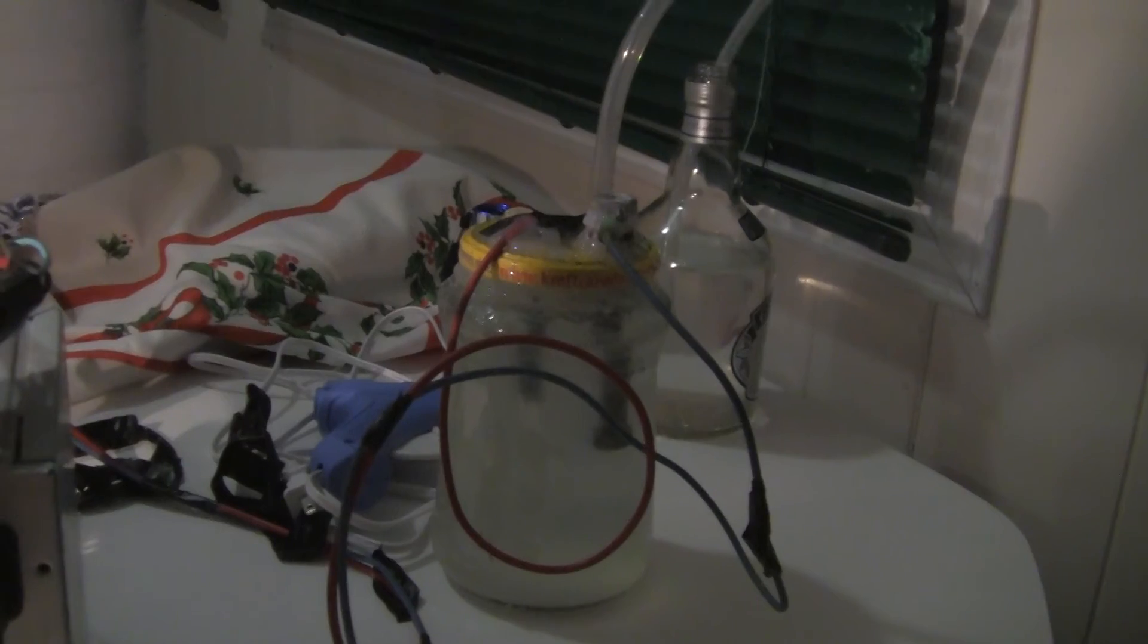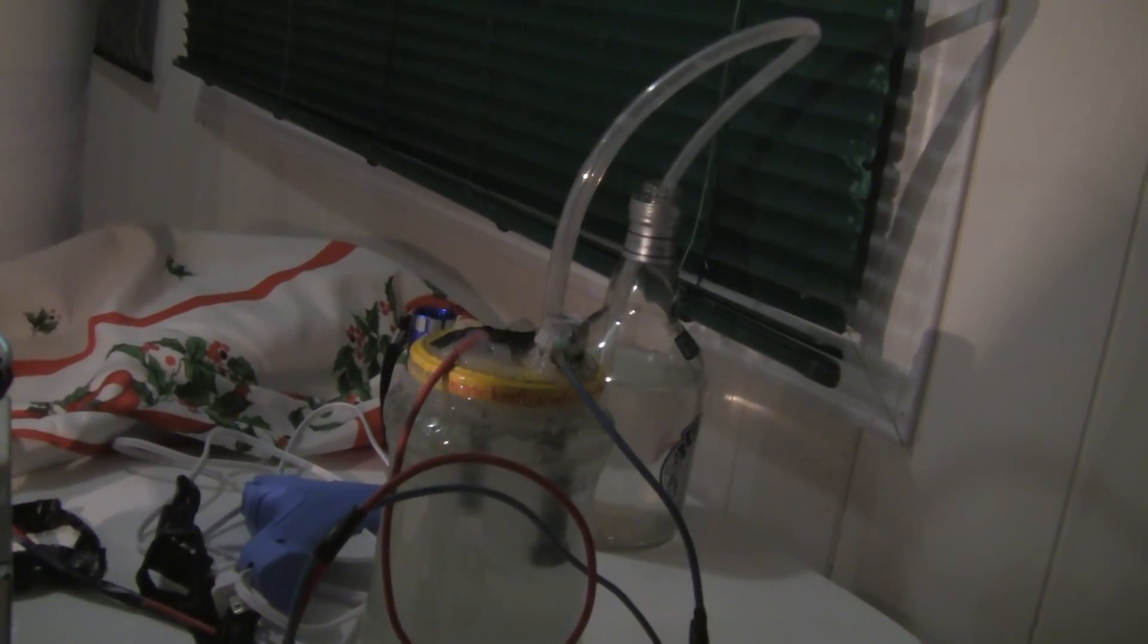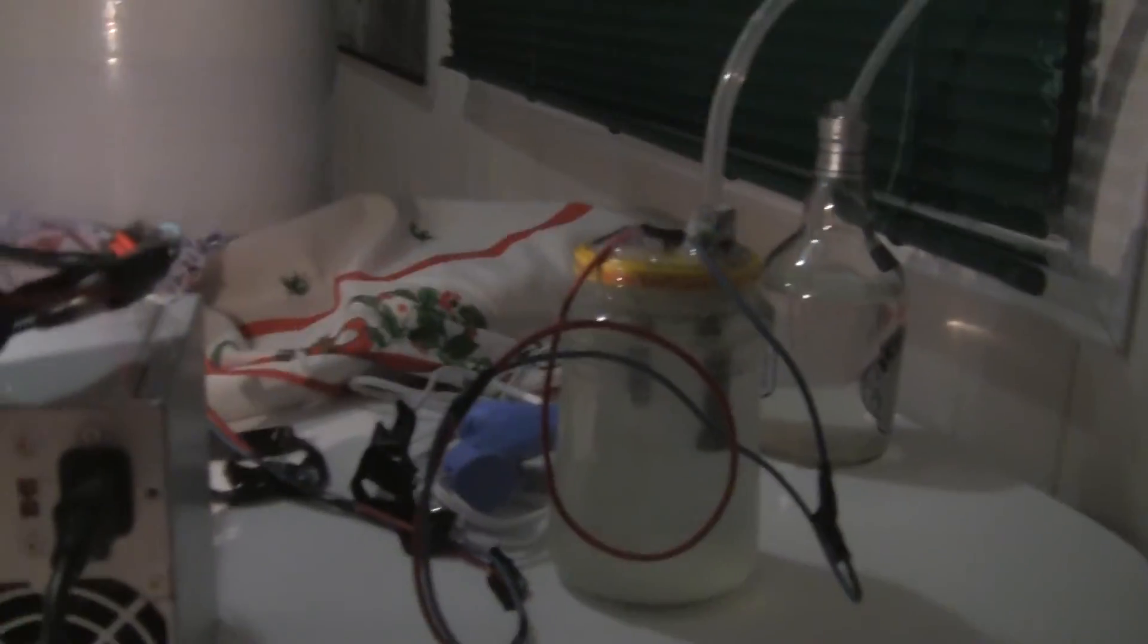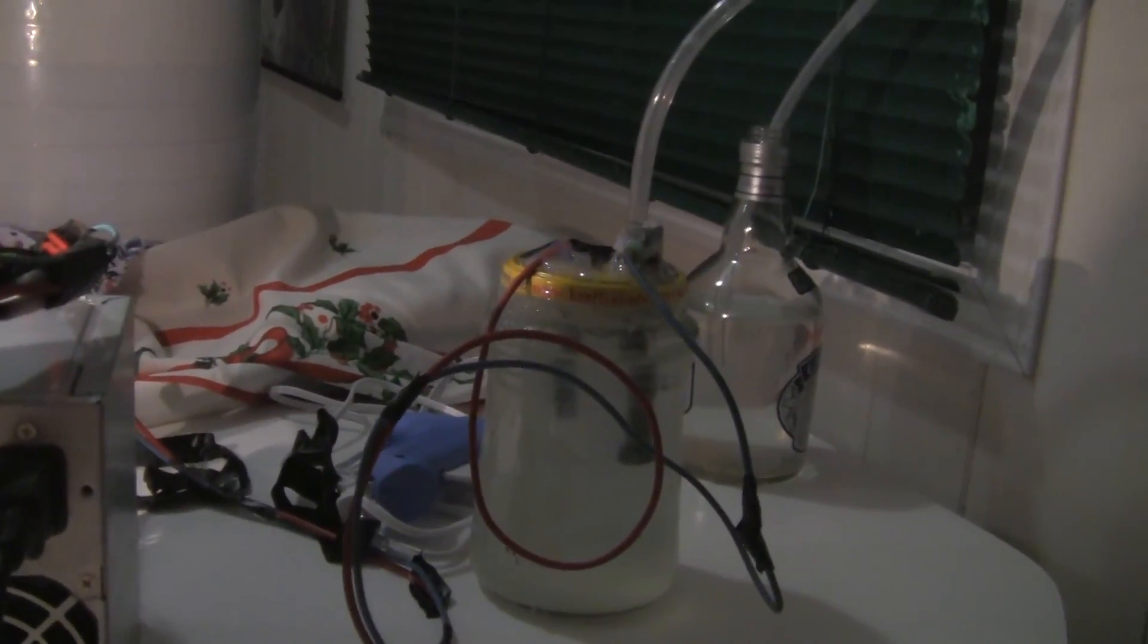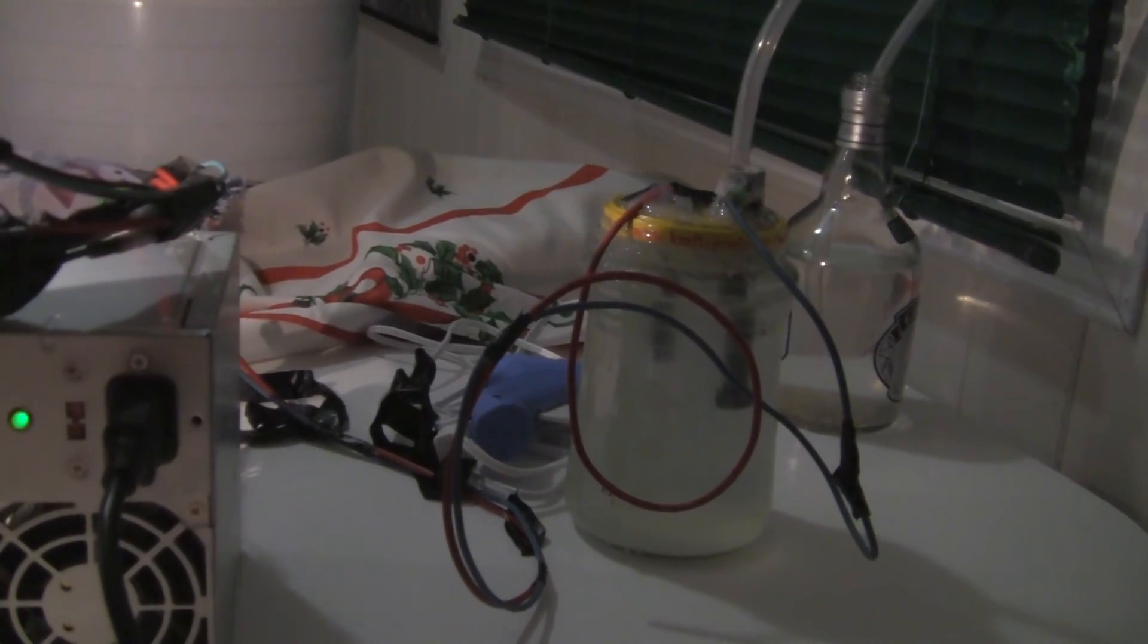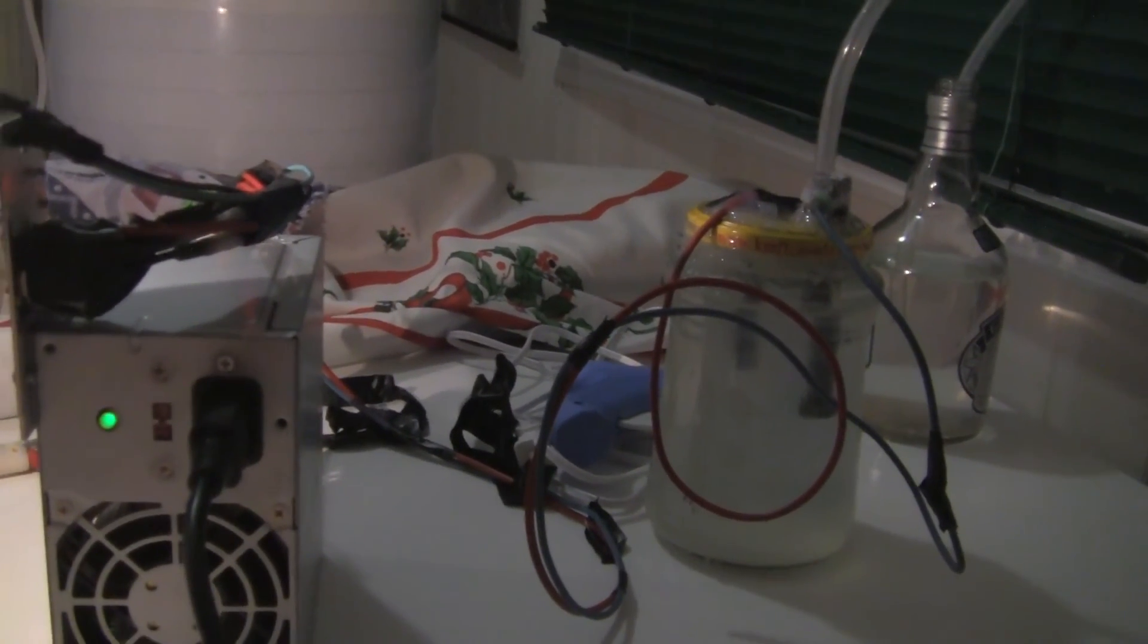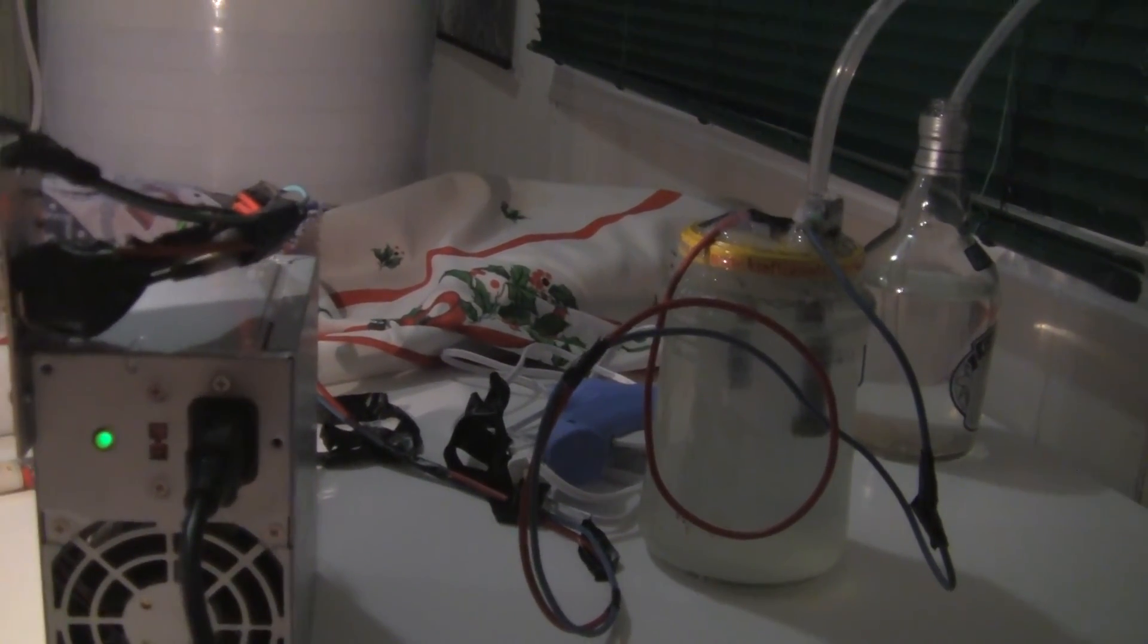I'm waiting on an MMO anode and cathode set coming from, I can't remember what website I found it on, but it's like seven inch diameter. It's kind of a circular shape, one fits inside the other one. It looks like it'll be great. They're actually on sale now, 100 bucks as opposed to 150.